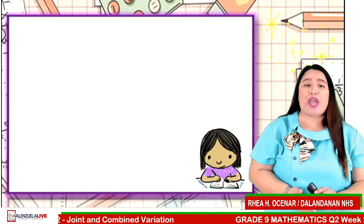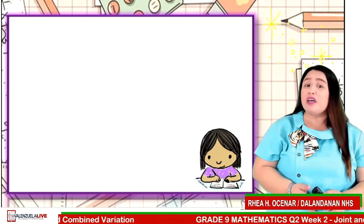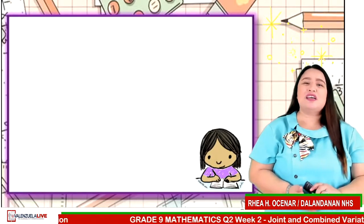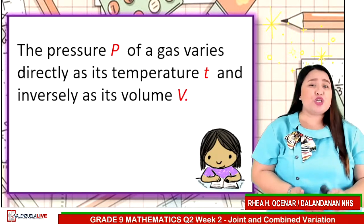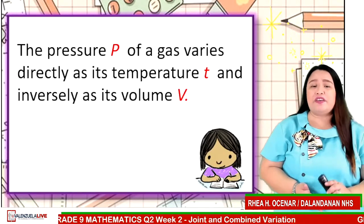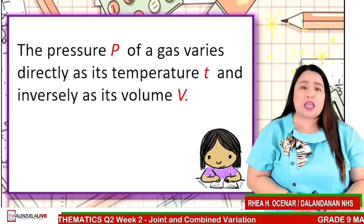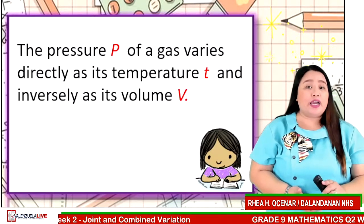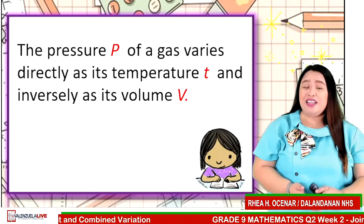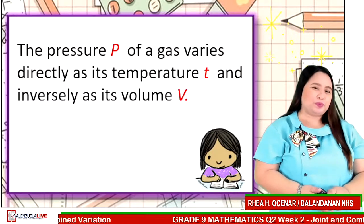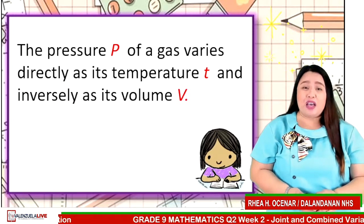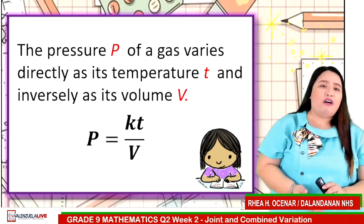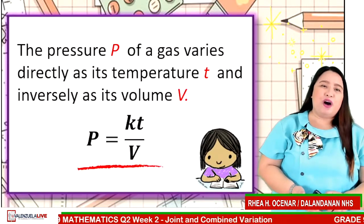Let us now try to translate variation statements into mathematical equations. You can type your answer in the chat box or in the comment section. Here is our first statement: the pressure P of a gas varies directly as its temperature T and inversely as its volume V. Write into mathematical equation. Key in your answer now. If you answered P is equal to KT over V, you are correct.